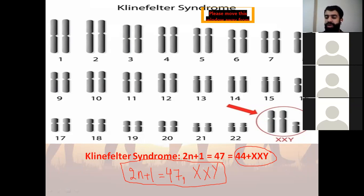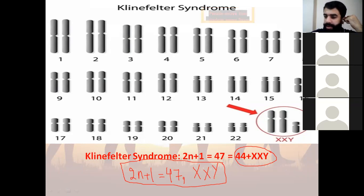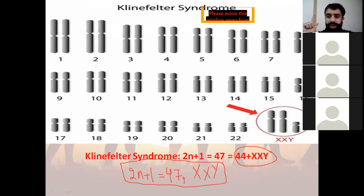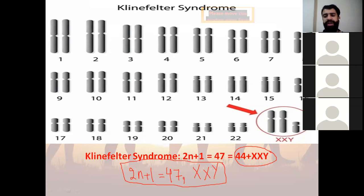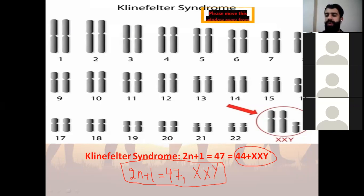Trisomy 21 — is it autosomal or gonosomal? It is autosomal, since it affects pairs 1 to 22, which are the autosomes. Is the individual sterile or fertile? It can give birth — it is fertile, not sterile. So whenever the abnormality is in the gonosomes it leads to sterility; whenever it is in the autosomes it does not affect fertility.